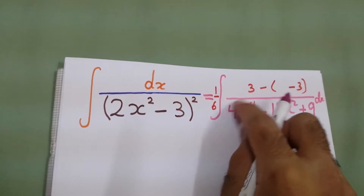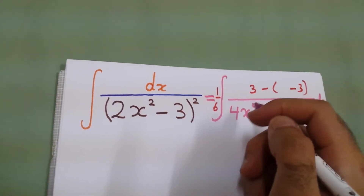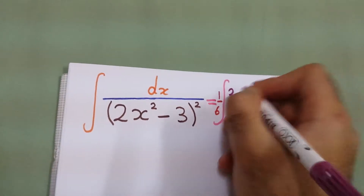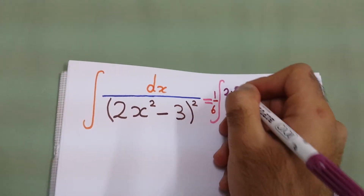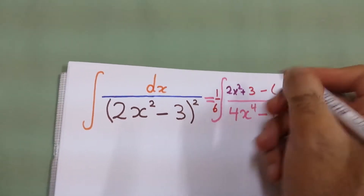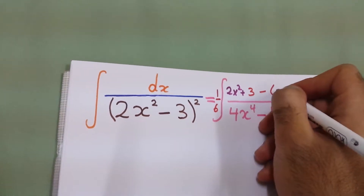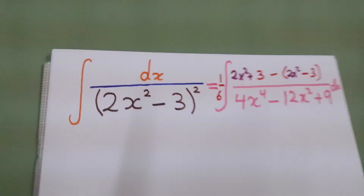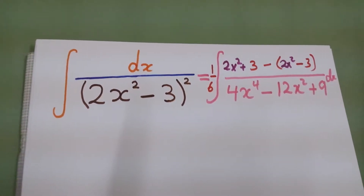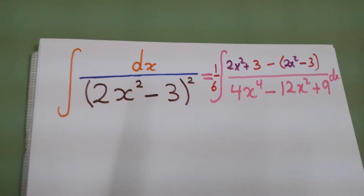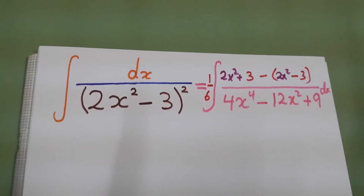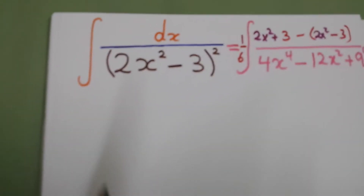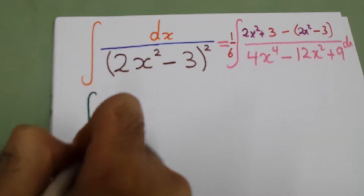Also, add the square root of this term and subtract the square root of this term, which is 2x². We add 2x² and subtract 2x². Now divide both the numerator and denominator by x².